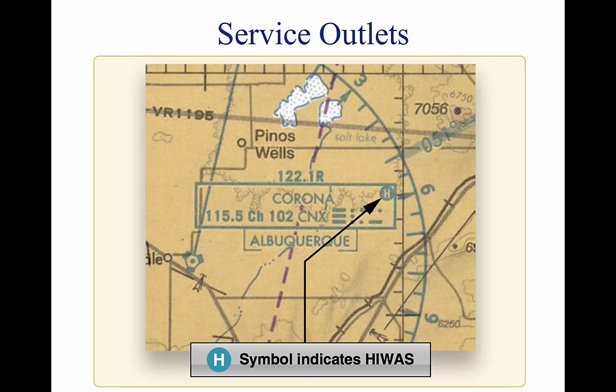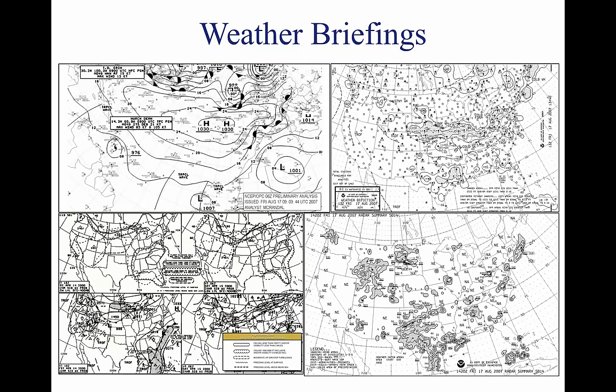At the discretion of the broadcast facility, recordings may also include a synopsis, winds aloft forecast, en-route and terminal forecast data, and radar reports. Prior to every flight, pilots should gather all information vital to the nature of the flight. This includes an appropriate weather briefing obtained from a specialist at an FSS, AFSS, or NWS.